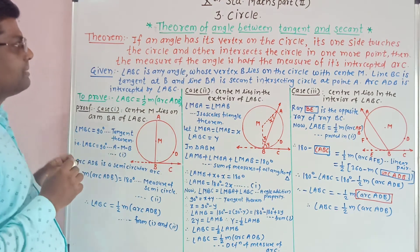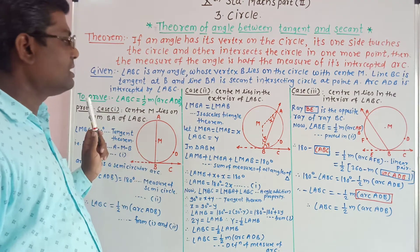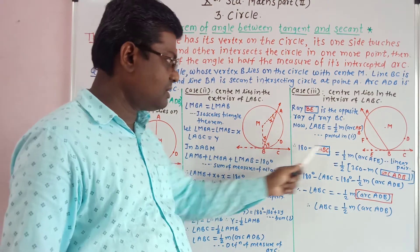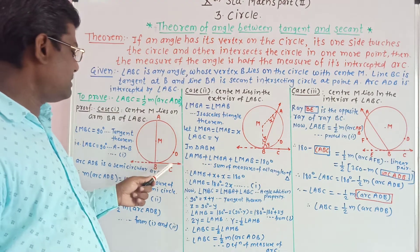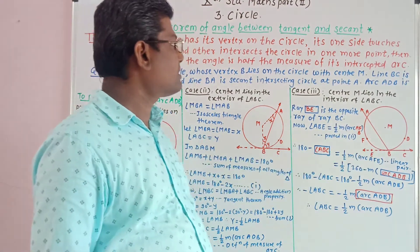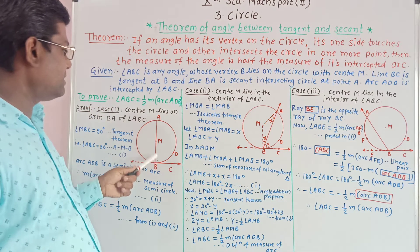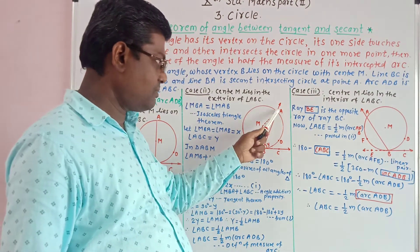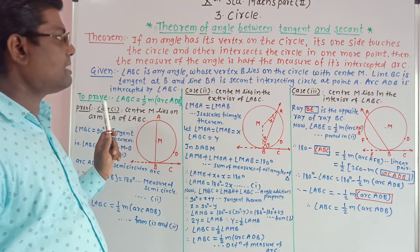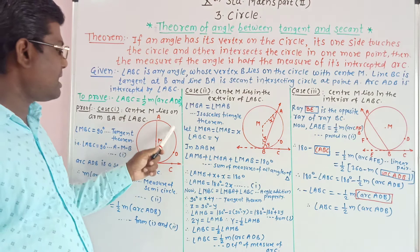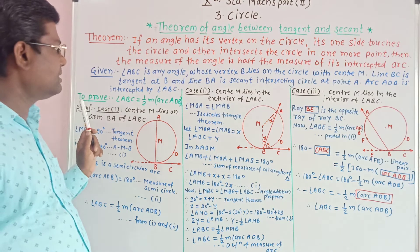This is what we have to prove: if an angle has its vertex on the circle — angle ABC has its vertex B on the circle — its one side BC touches the circle (tangent), and the other side AB intersects the circle at point A (secant). Then the measure of angle ABC is half of the measure of intercepted arc ADB.